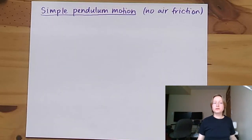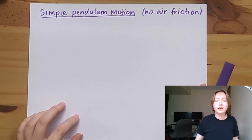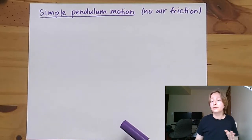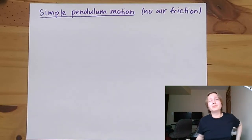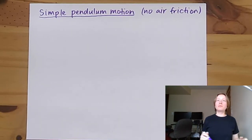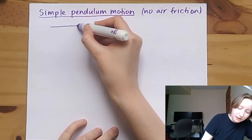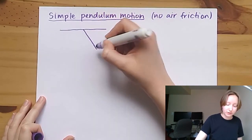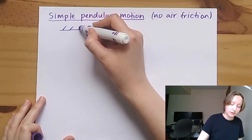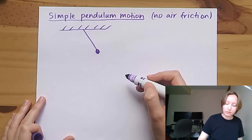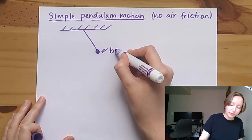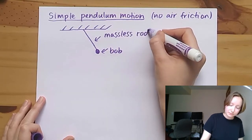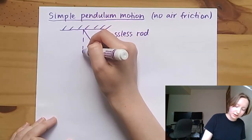I wanted to talk about an application of Taylor series to a physics problem where we'll look at the motion of a simple pendulum with no air friction. It's an idealized situation but it's a really good problem to study. A simple pendulum consists of a massless rod hanging from the ceiling attached to a weighted bob.